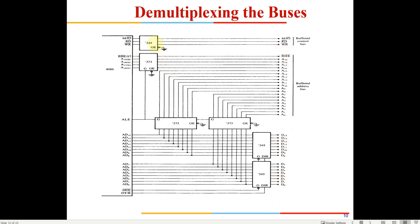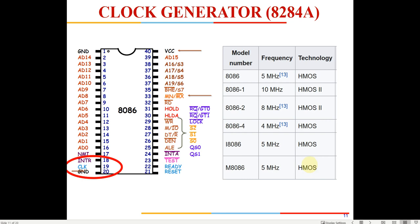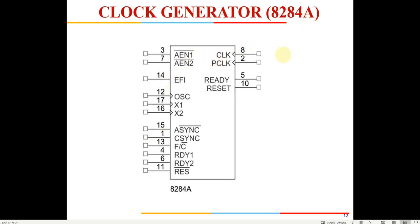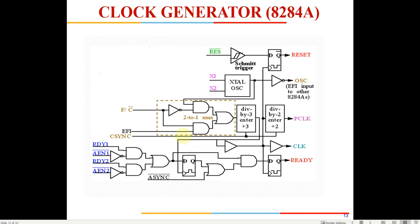This is how bus demultiplexing is done — the address lines come in, and address bus latches are used here, as shown in the main block diagram. The 8086 also requires a clock. There are several versions of 8086 and they generally operate on a 5 MHz clock.